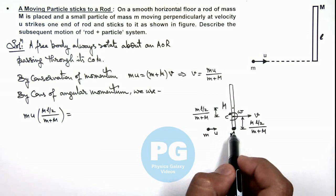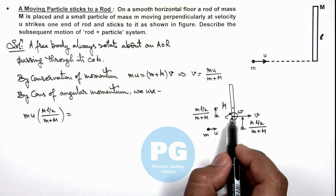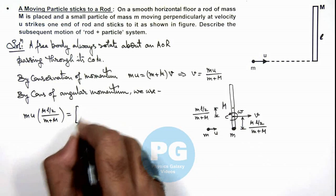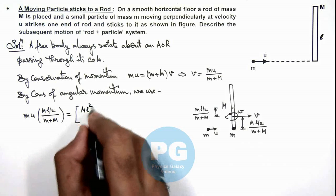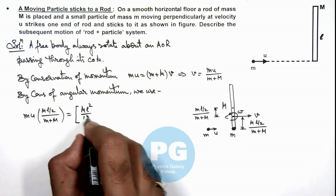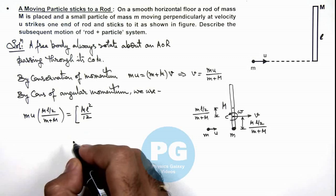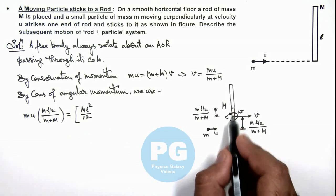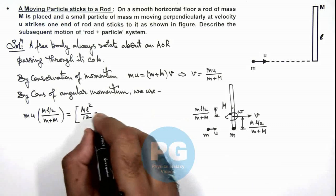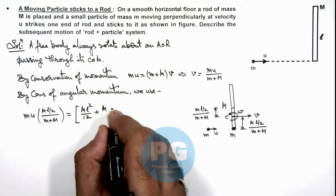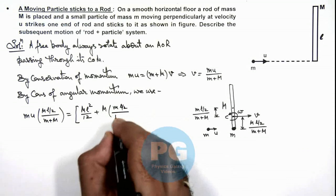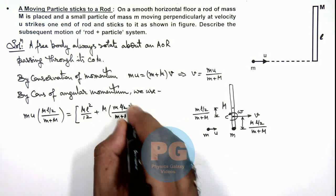So for the rod, moment of inertia about this new center of mass we can write as Ml²/12. In this situation, Ml²/12 is about the center of mass, plus M multiplied by [(ml/2)/(m+M)]².